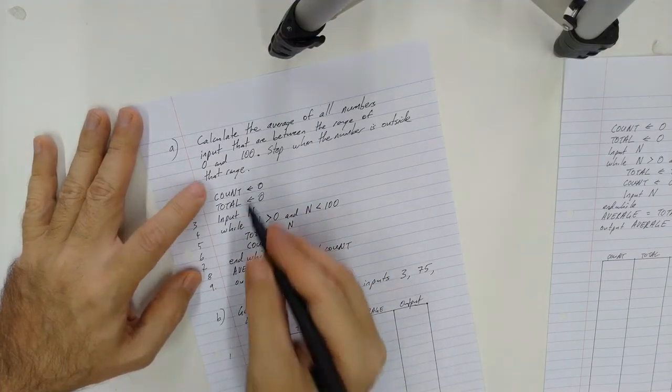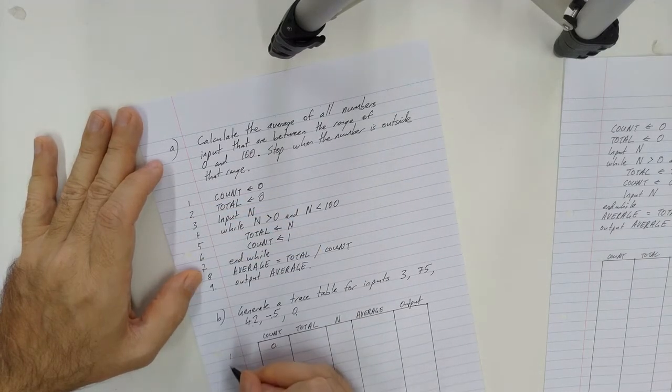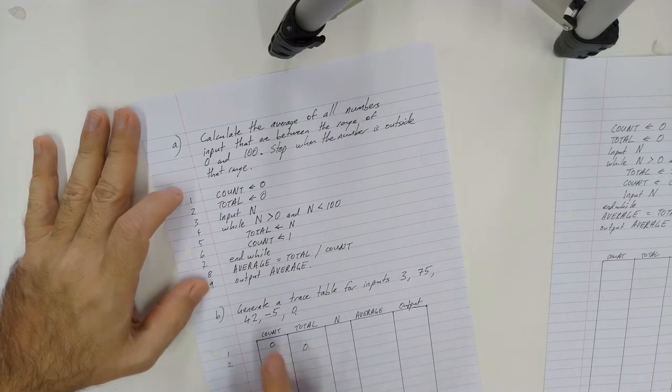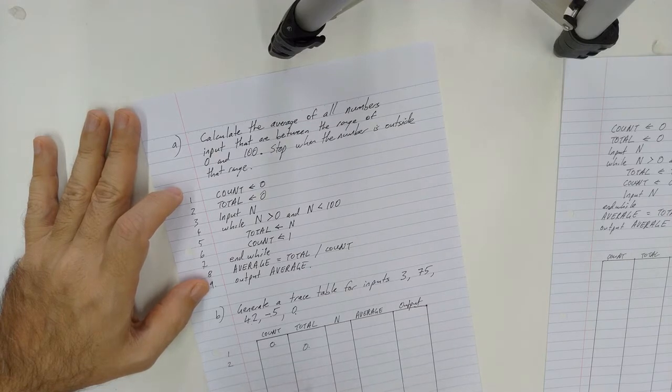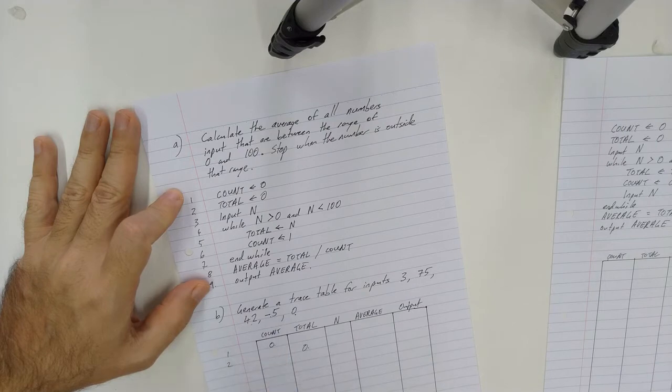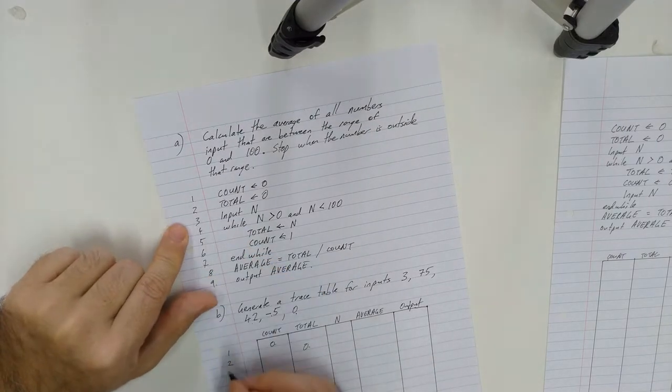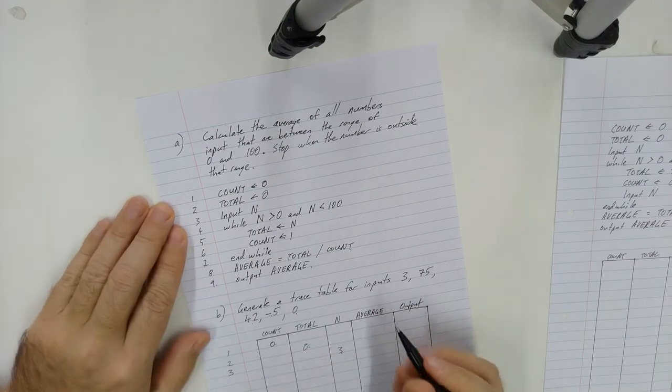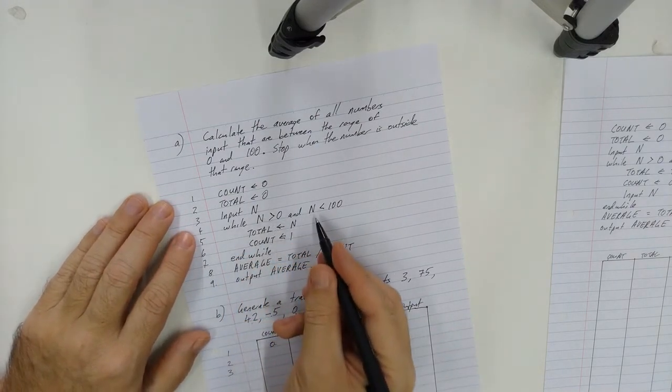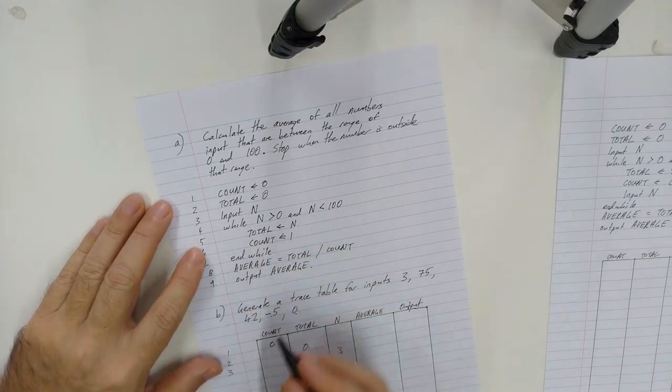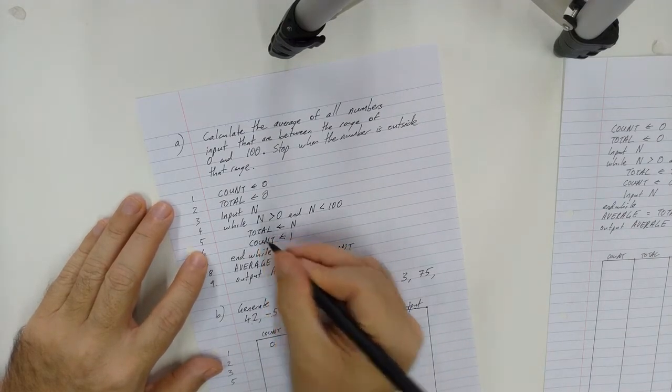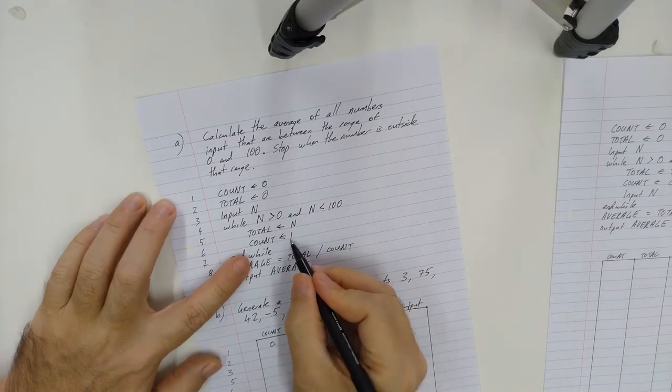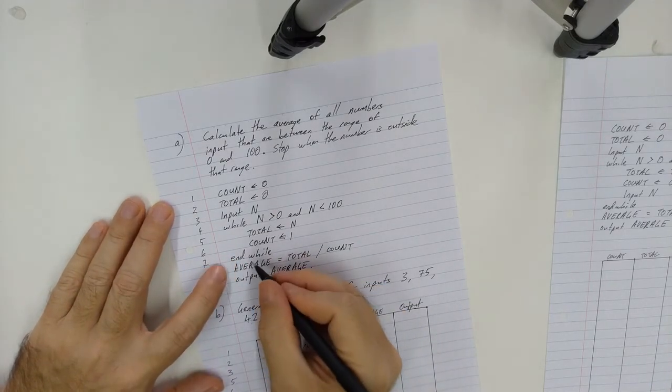Alright, and so I'm going to start in line one. What's the first thing that happens? Count gets set to the value of zero. Line two. Total is getting set to the value of zero. Now basically the idea is anytime I'm then using a variable lookup, I can just... So if I'm down here I can see, ooh, last time I set a value for count it was one or zero. So you can look up your variables that way. So here, line three, input n. So the first number being inputted is three. That's going into n. So three can go into n. Number four. While n is bigger than zero and less than 100, is that the case? Yes. So we are going to move forward into line five. Take n, put it into total. So three goes into total. So far that all looks good. Line six. One goes into count.